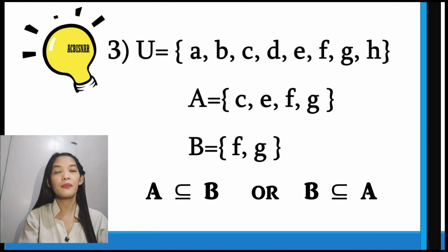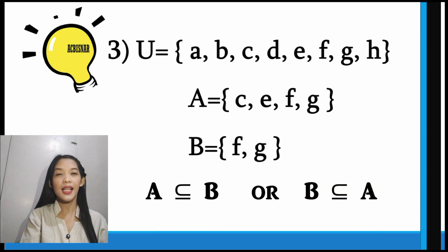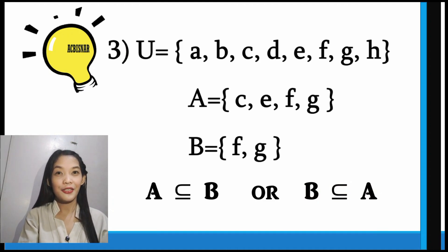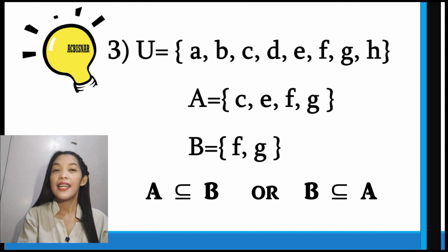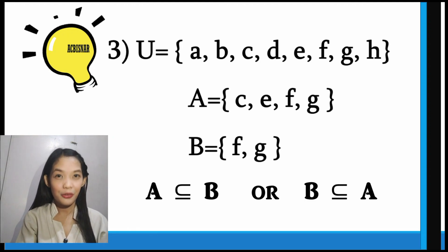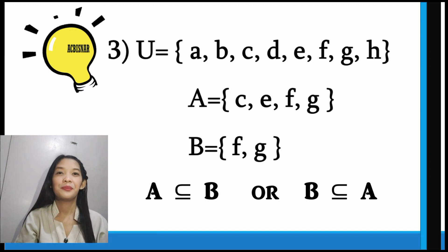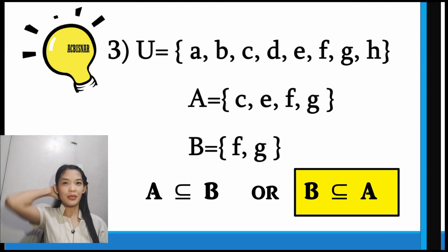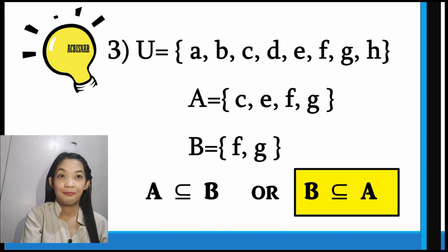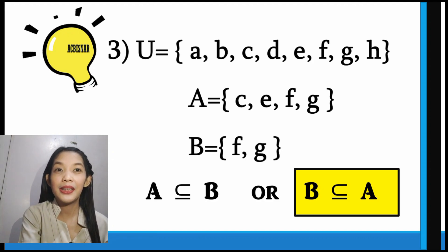Let us have example number 3. The universal set has the elements A, B, C, T, E, F, G, and H. Set A has the elements C, E, F, and G. And set B has the elements F and G. Is it A is a subset of B, or B is a subset of A? The answer is B is a subset of A, because every element in B — F and G — can be found in A.